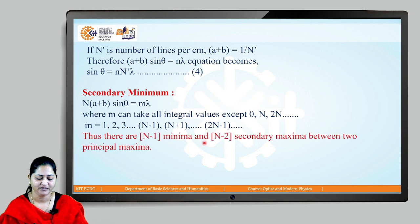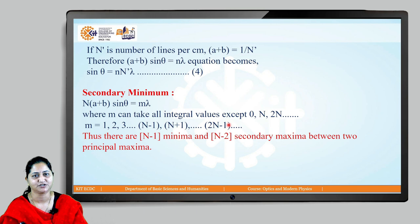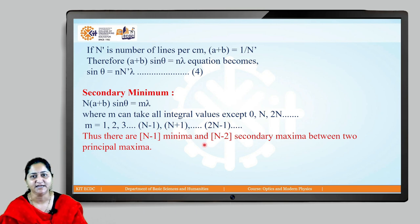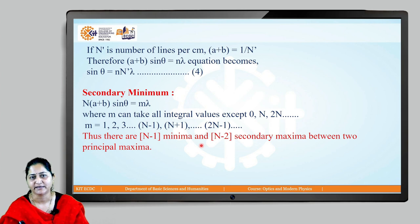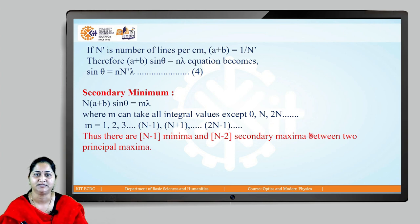In the diffraction pattern, there are N − 1 secondary minima and N − 2 secondary maxima between two principal maxima.